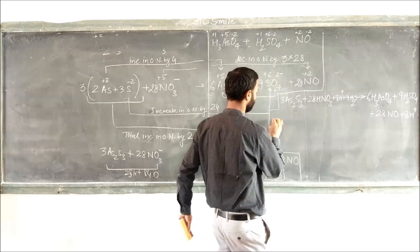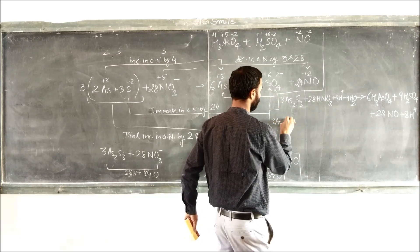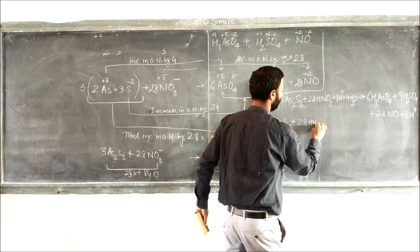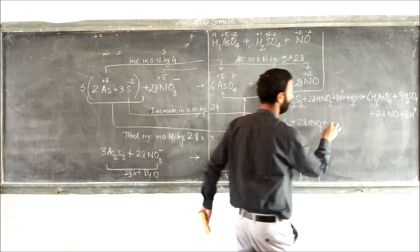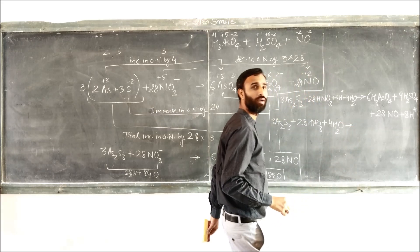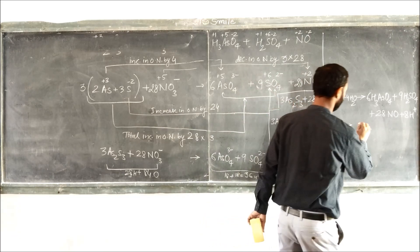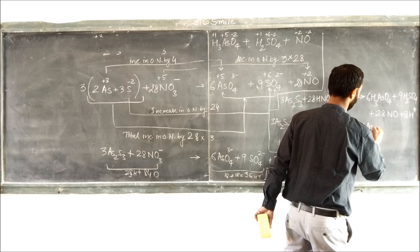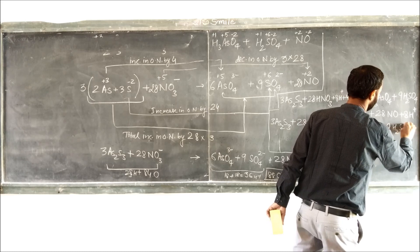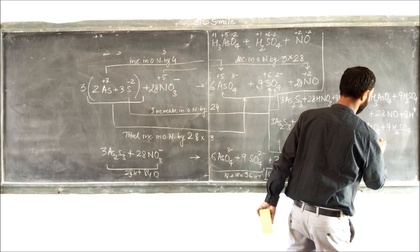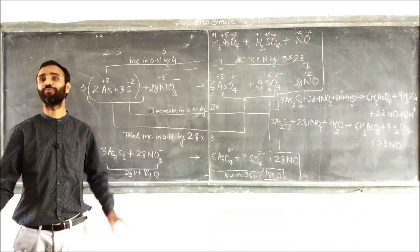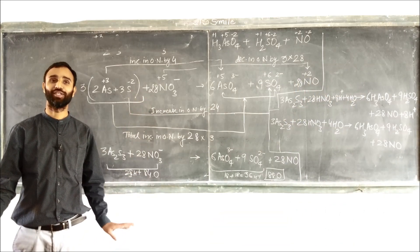So the final equation is: 3 As2S3 plus 28 HNO3 plus 4 H2O gives 6 H3AsO4 plus 9 H2SO4 plus 28 NO. And now, so it is complete balanced equation.